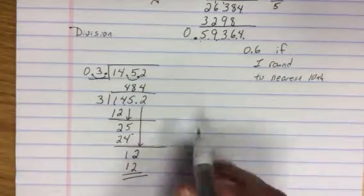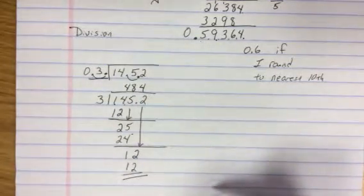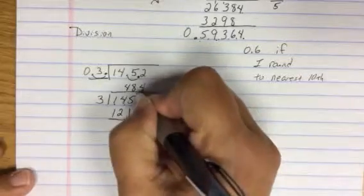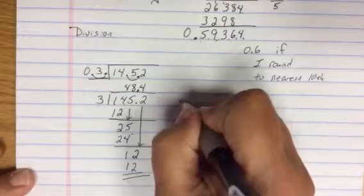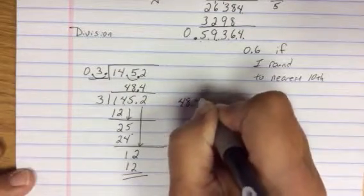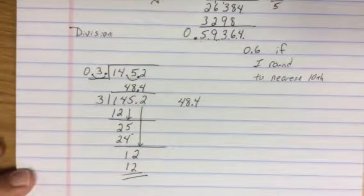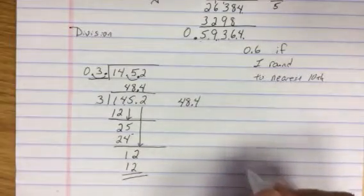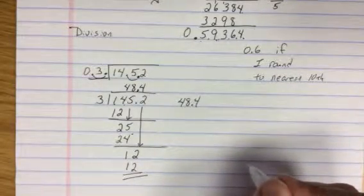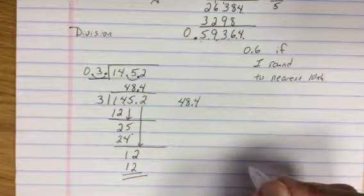If I needed to go further, I would add a 0 and keep going. But my final answer, decimals here, I bring it straight up. So my final answer would be 48.4. So when 0.3 divides into 14.52, it goes in 48.4 times.